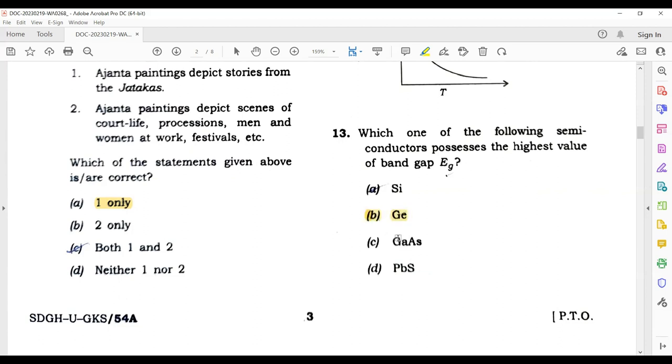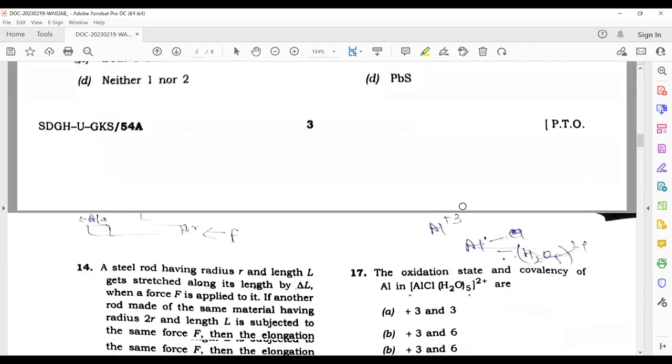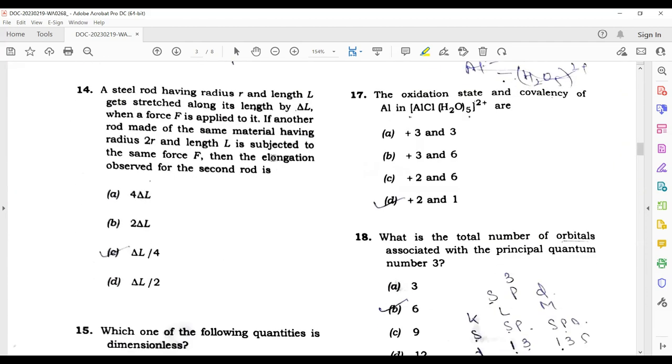Next question: a steel rod having radius R and length L gets stretched along its length by delta L when a force F is applied to it. If another rod of same material has radius 2R, then the new length will be delta L by 4. This is the correct answer.